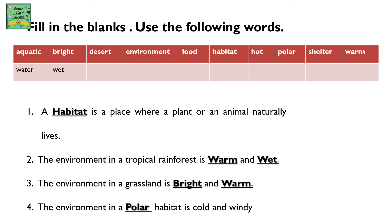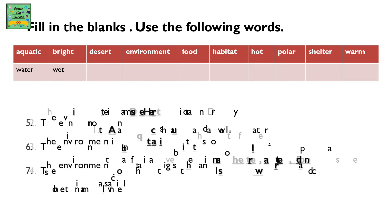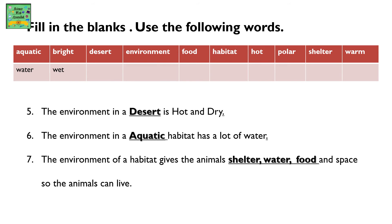The environment in a polar habitat is cold and windy. The environment in a desert is hot and dry. The environment in an aquatic habitat has a lot of water. The environment of a habitat gives the animals shelter, water, food, and space so the animals can live.